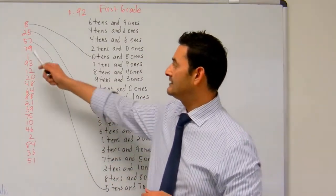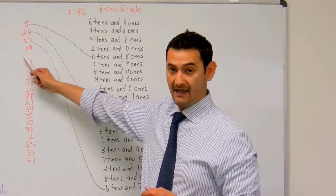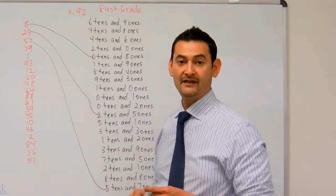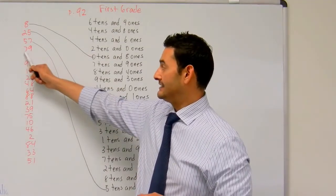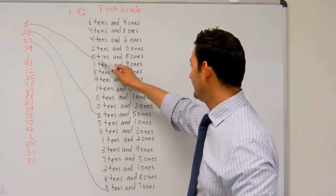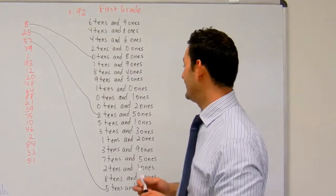How many bundles of ten do I have in 79? I've got seven. How many ones do I have in 79? I've got nine. So this is going to be seven tens and nine ones. Let's look for seven tens and nine ones. There it is.